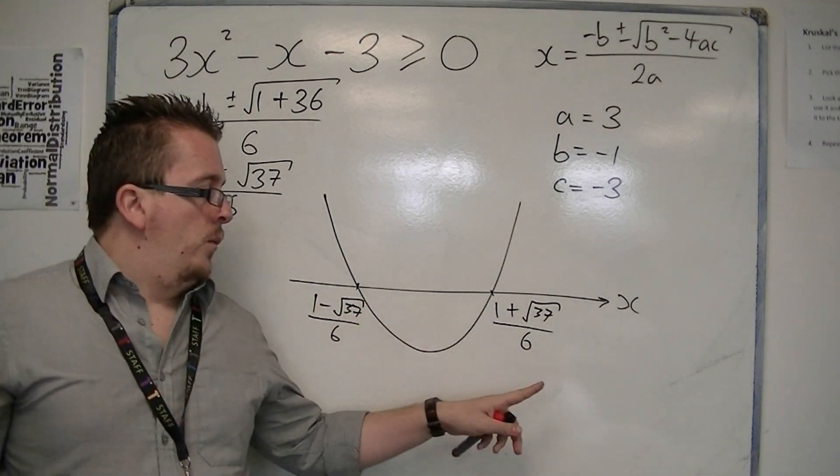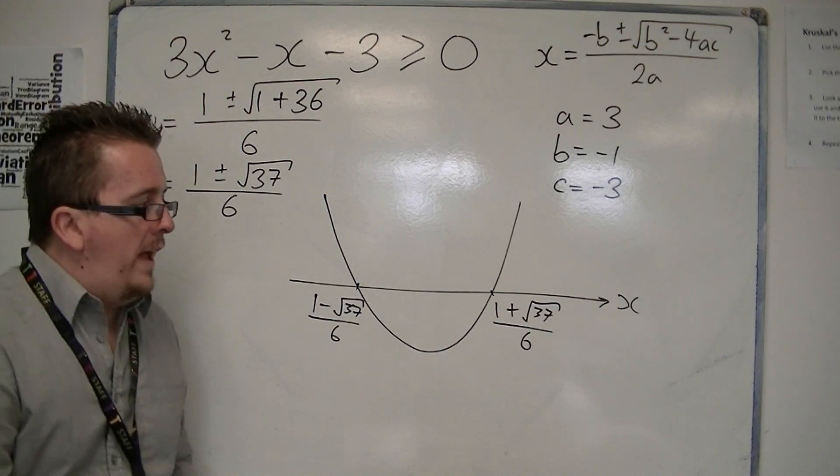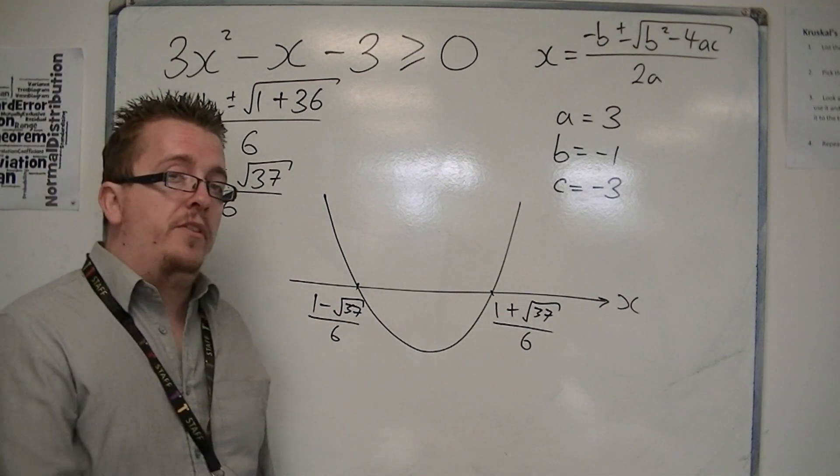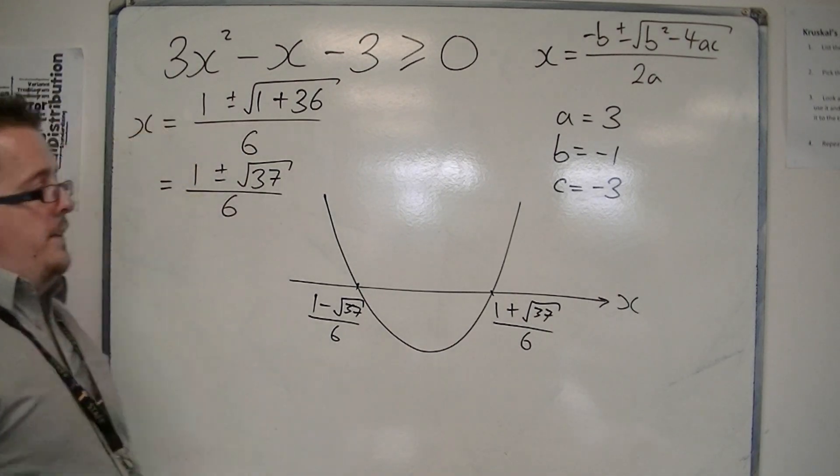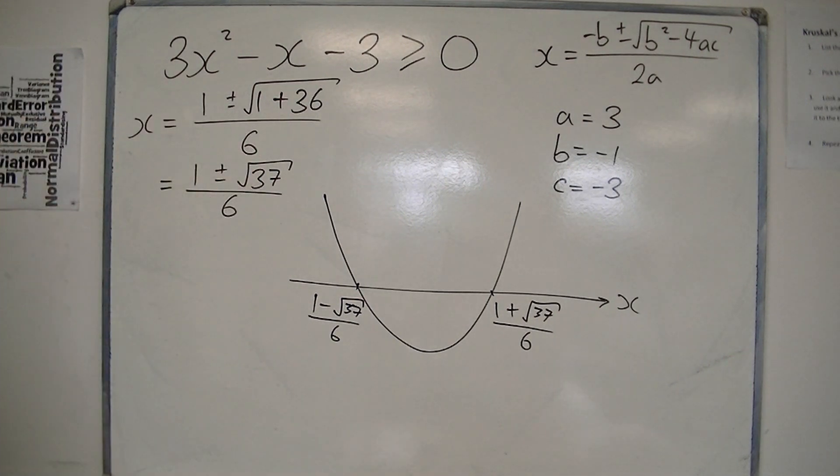There might be one or two of you asking, how did I know that they were that way round? Well, 1 take away root 37 over 6 is bound to be smaller than that one. You could, if you don't believe me, you could just plug them into a calculator, but I assure you that's the right way round.